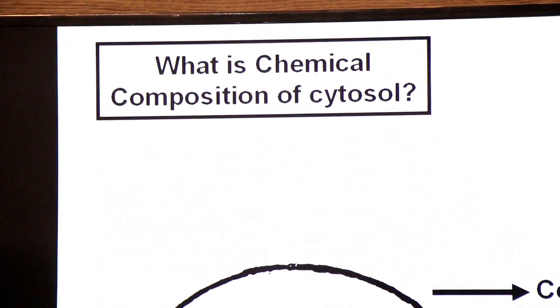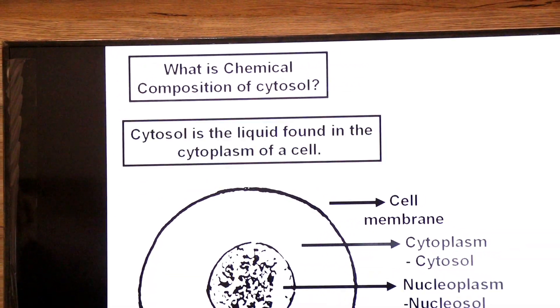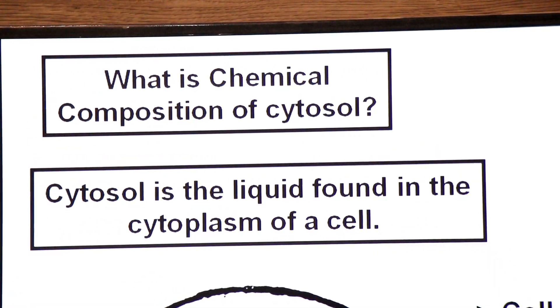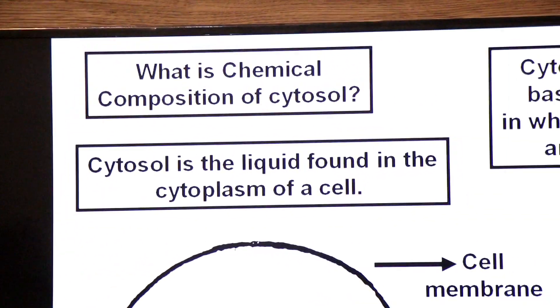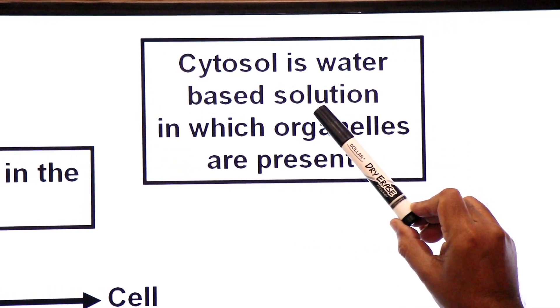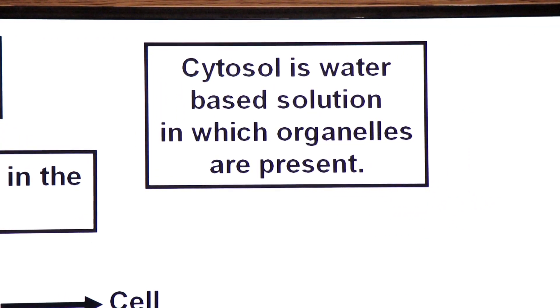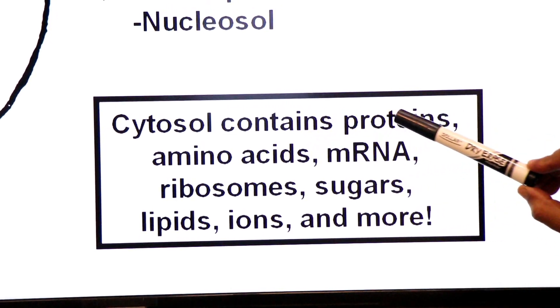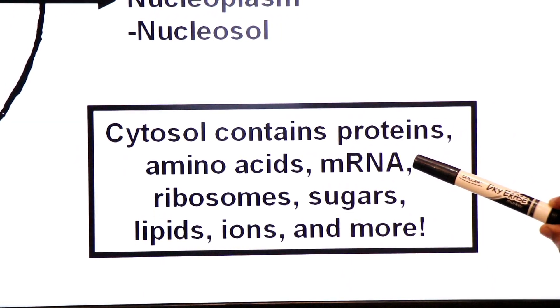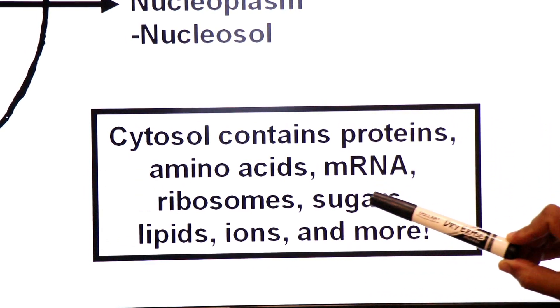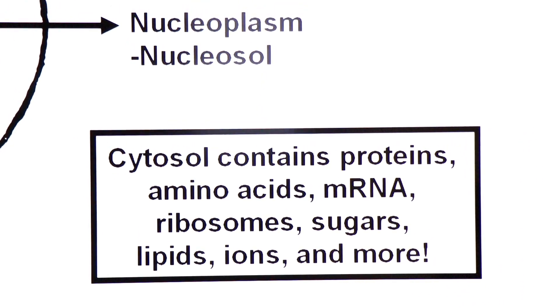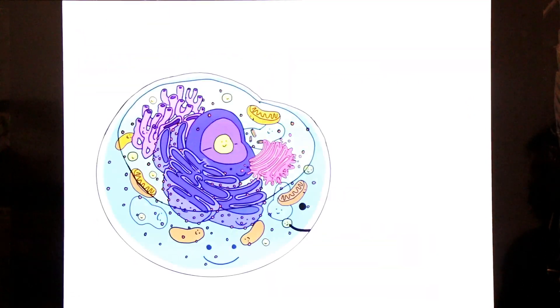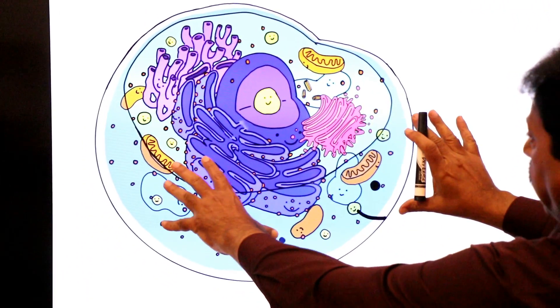What is chemical composition of cytosol? Cytosol is the liquid found in the cytoplasm. Cytosol is water based solution in which organelles are present. This is the chemical composition of cytosol. Cytosol contains proteins, amino acids, messenger RNA, ribosomes, sugars, lipids, ions and more molecules. Focus on the whole slide and take screenshot, dear students.